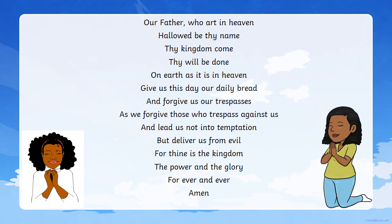Let's repeat the Lord's Prayer. Our Father, who art in heaven, hallowed be thy name. Thy kingdom come, thy will be done, on earth as it is in heaven. Give us this day our daily bread, and forgive us our trespasses, as we forgive those who trespass against us. And lead us not into temptation, but deliver us from evil. For thine is the kingdom, the power and the glory, forever and ever. Amen.